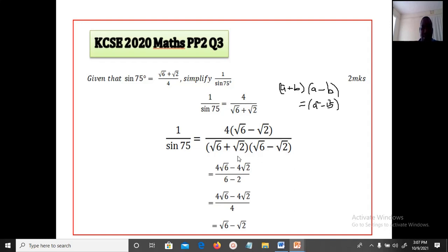So multiply the numerator by root 6 minus root 2 and the denominator by root 6 minus root 2. From here we can see that we have a difference of 2 squared. You can remember the formula a plus b into a minus b is equal to a squared minus b squared.